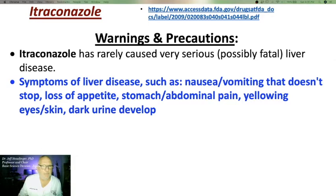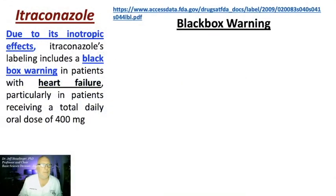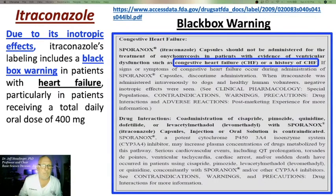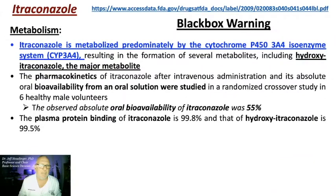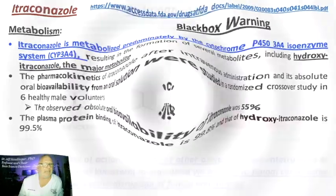Symptoms of hepatotoxicity to watch out for include nausea, vomiting that doesn't stop, loss of appetite, stomach or abdominal pain, yellowing eyes or skin, and dark urine. Due to its inotropic effects, itraconazole's labeling includes a black box warning for patients with congestive heart failure. This drug is predominantly metabolized by CYP3A4, resulting in the formation of several metabolites including hydroxyitraconazole, which is the major metabolite.